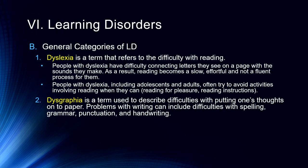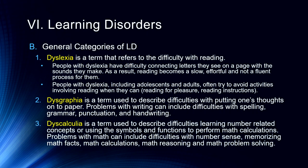Dysgraphia is a term used to describe difficulties with putting one's thoughts onto paper — writing problems that can include difficulties with spelling, grammar, punctuation, and handwriting. Interestingly, in cognitive neuroscience we distinguish agraphia (inability to write) from alexia (inability to read). Individuals can be agraphic but not alexic — meaning they can read but not write — or they can write something but cannot read what they've just written. So dysgraphia and dyslexia are both language disorders but at different parts of the problem.